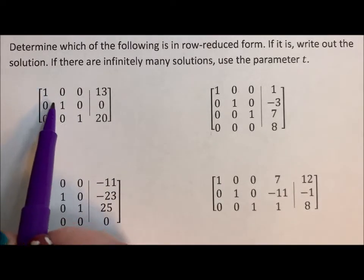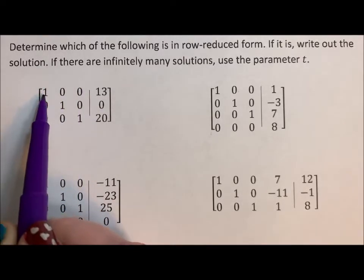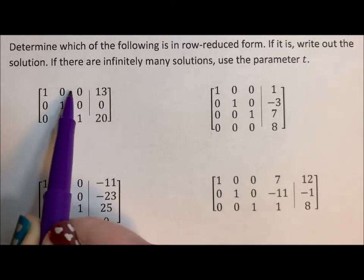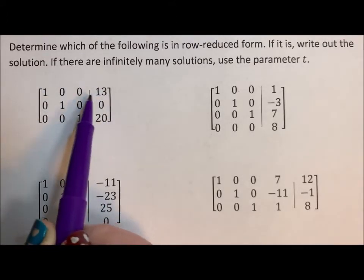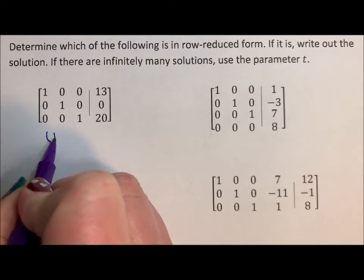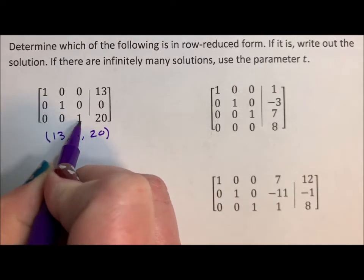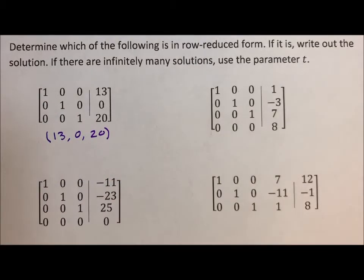All right, so this one, we have our identity matrix on the left. We have ones along the major diagonal, zeros everywhere else. X is 13, Y is 0, Z is 20, which means our solution is 13, 0, 20. If we have it in row-reduced form, we write our solution in parenthetical form.